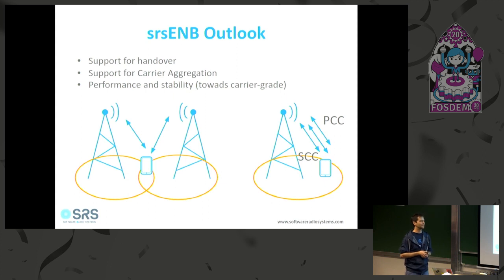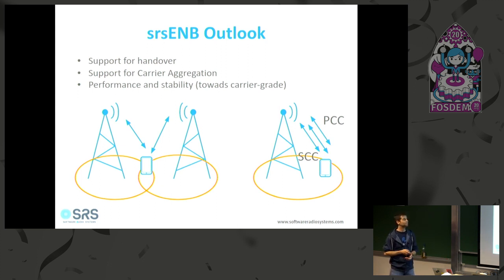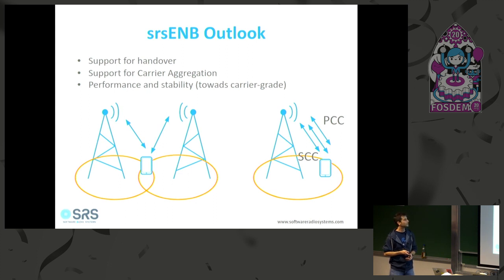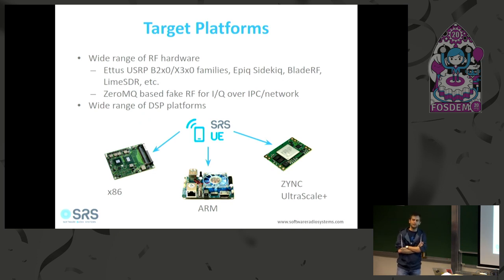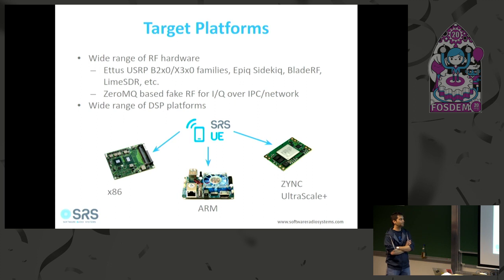We will be focusing heavily on performance and stability because we are deploying this and it needs to be rock solid. Up until now the priority has been x86 because the PHY is so computationally intensive — running full LTE PHY on ARM is not really viable due to the SIMD requirements. Even with a powerful Snapdragon or Raspberry Pi 4 you can run smaller bandwidths like 6 PRBs, but a 20 MHz LTE signal is not feasible.